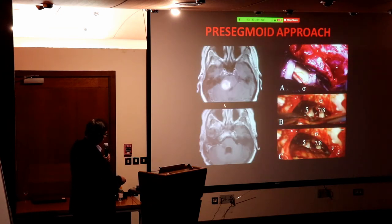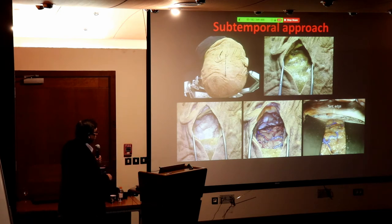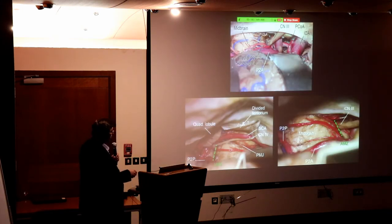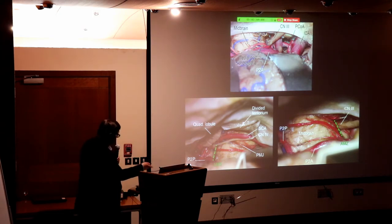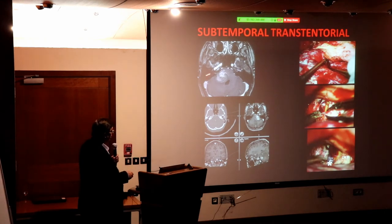The pre-sigmoid approach for a deeply intrinsic lesion goes exactly where the lesion is. The subtemporal approach — open the dura, retract the temporal lobe, reach the upper brain stem. You may cut the tentorium and access the pons from above.